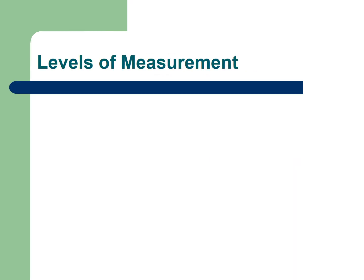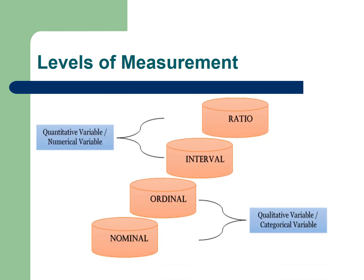There are four levels of measurements: the nominal, ordinal, interval, and ratio. Nominal and ordinal are qualitative or categorical variables, while interval and ratio are quantitative or numerical variables. Nominal is the lowest level, while ratio is the highest level of measurement.